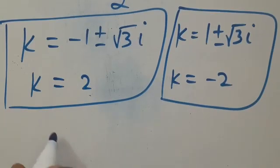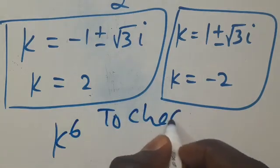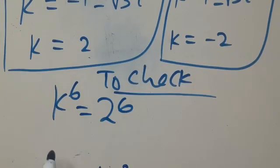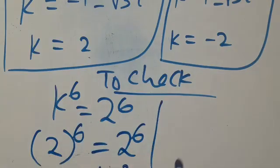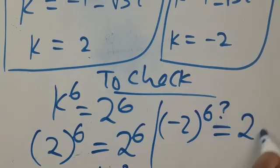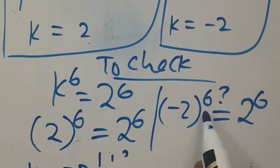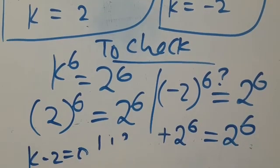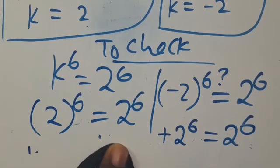So when you have k to the power of 6 equals 2 to the power of 6, and k equals 2, then 2 to the power of 6 equals 2 to the power of 6. Likewise when k equals minus 2, minus 2 all in brackets to the power of 6 gives 2 to the power of 6, since 6 is even. If you are new here and find this video interesting, don't forget to share, like, comment, and subscribe to our YouTube channel for more math tutorial videos. Bye-bye!